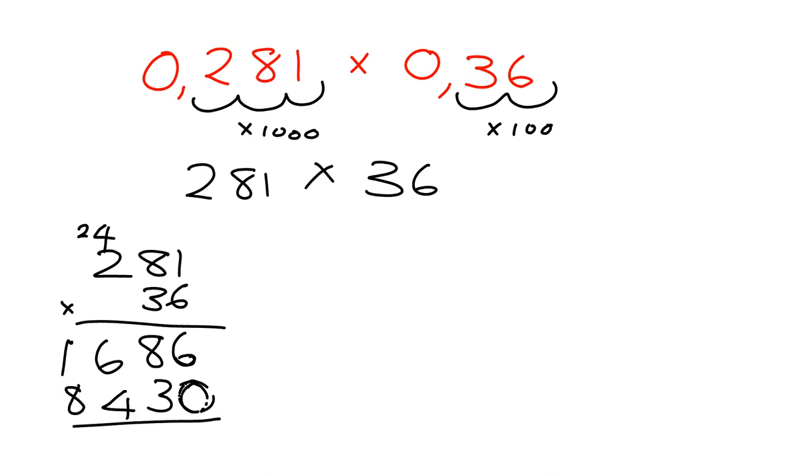3 times 1 gives me 3. Then I say 3 times 8 is 24, so I put down the 4 and carry the 2. Then I say 3 times 2 is 6 plus 2 gives me 8. Now I need to add these. 6 and 0 is 6, 8 and 3 is 11, put down the 1, carry the 1. 6 and 4 is 10 plus 1 is 11, carry 1. 8, 9, 10. So my answer to this is that.